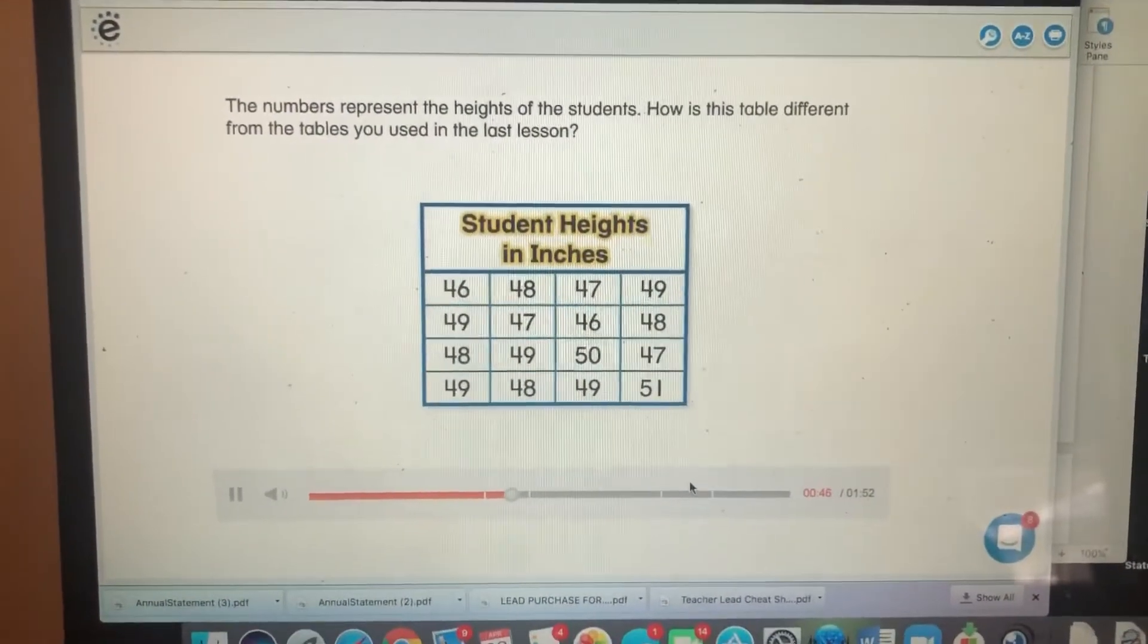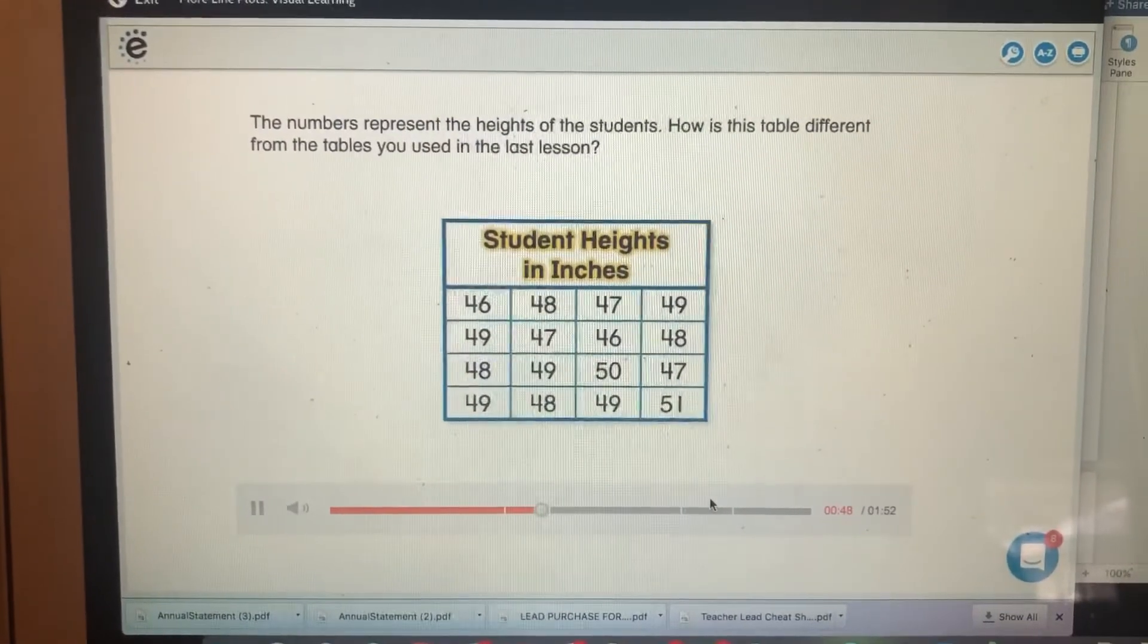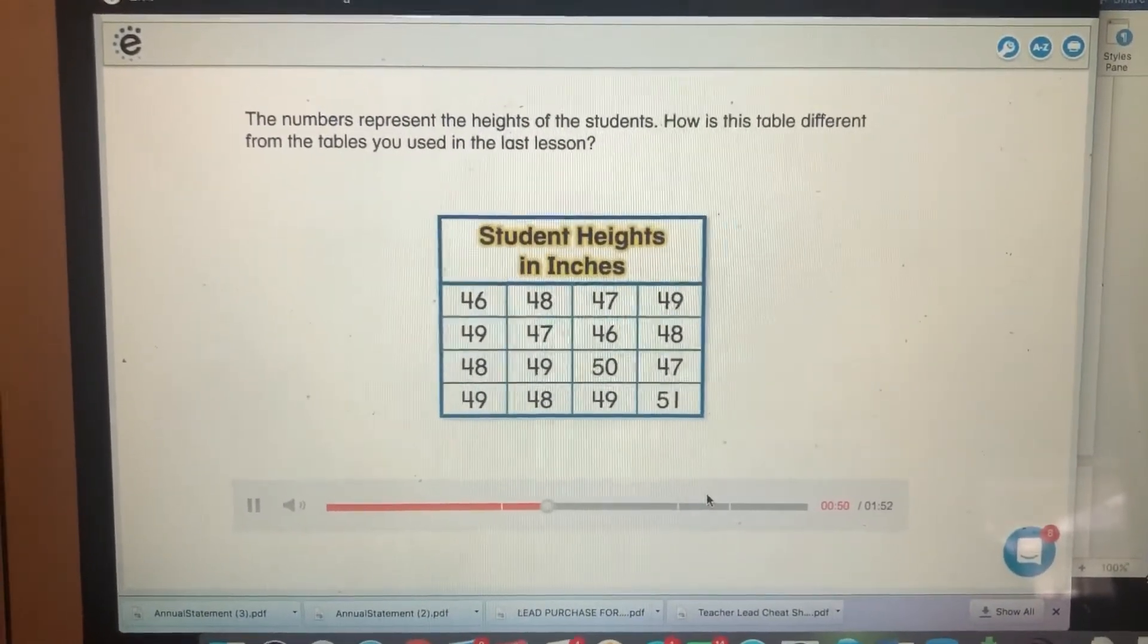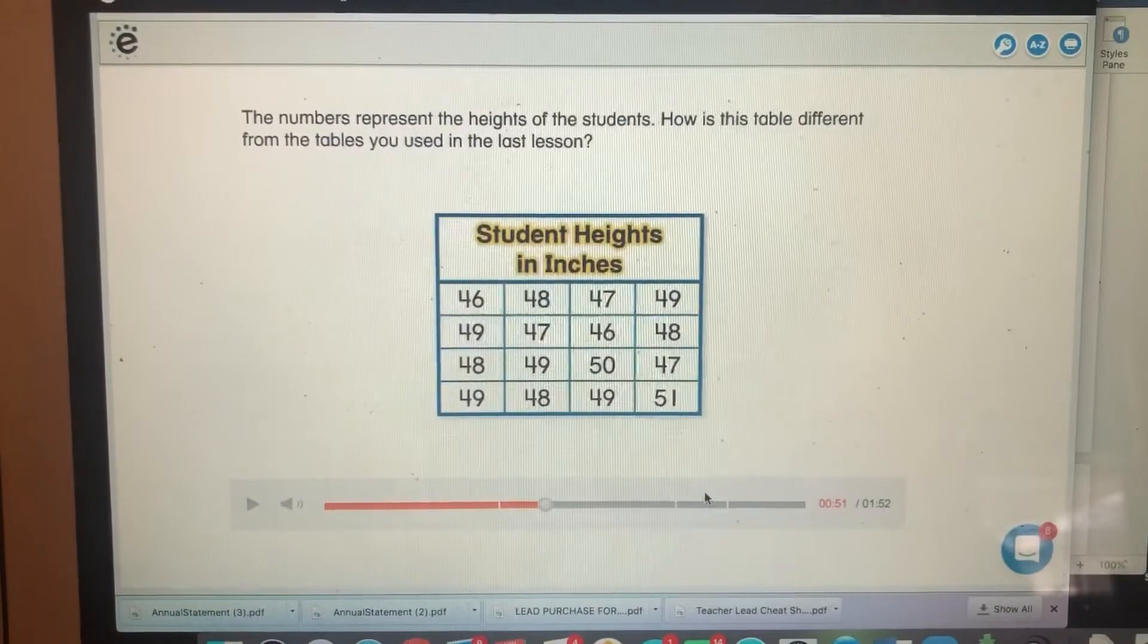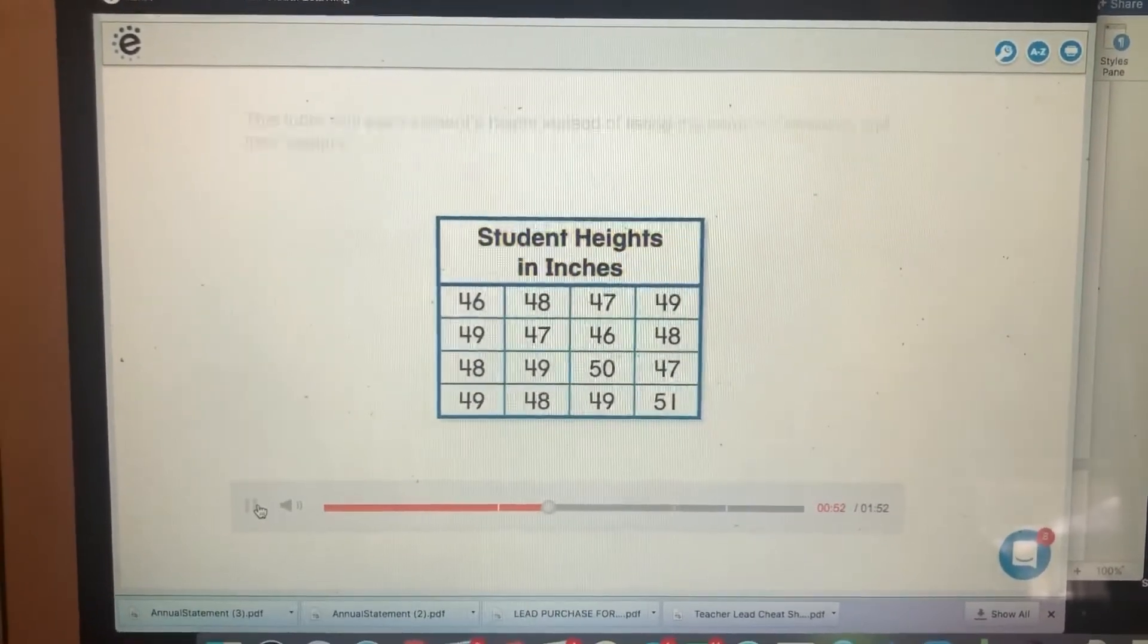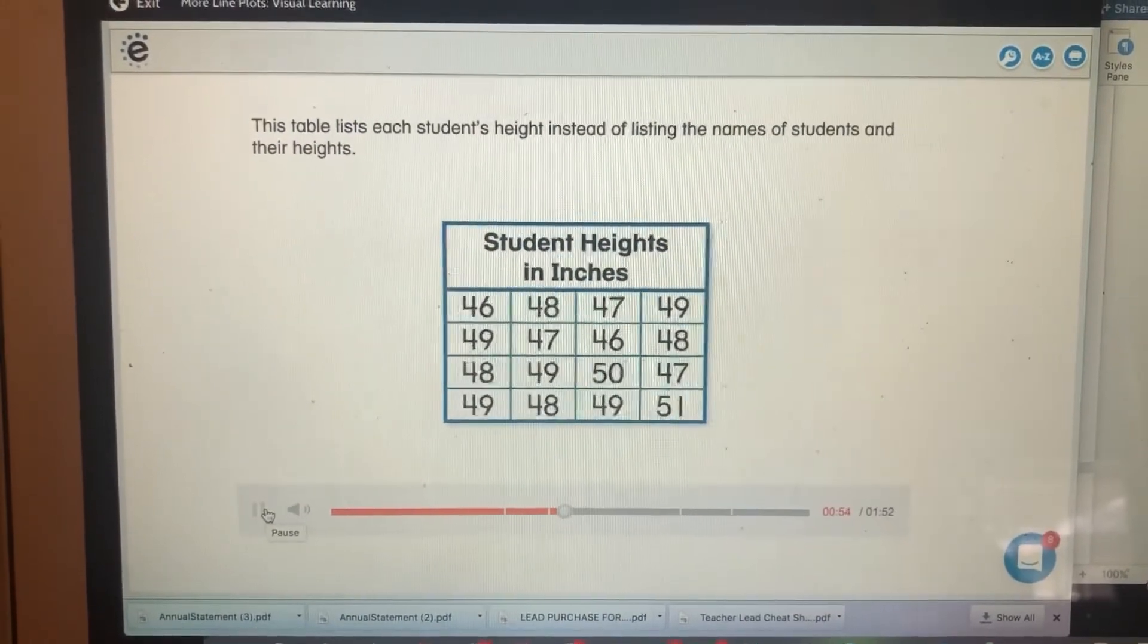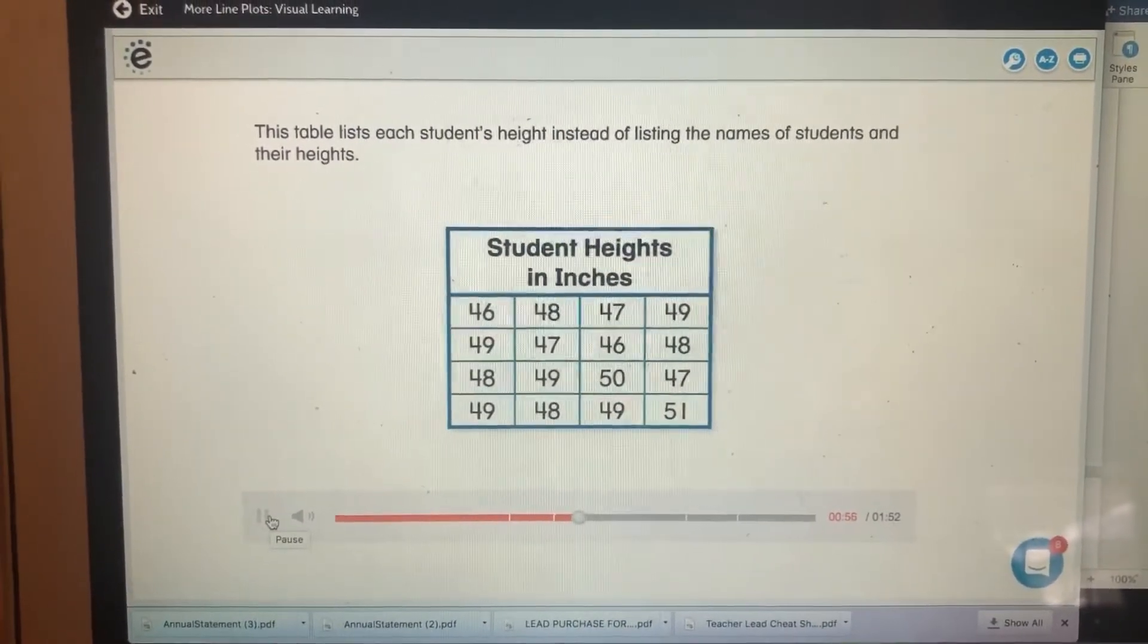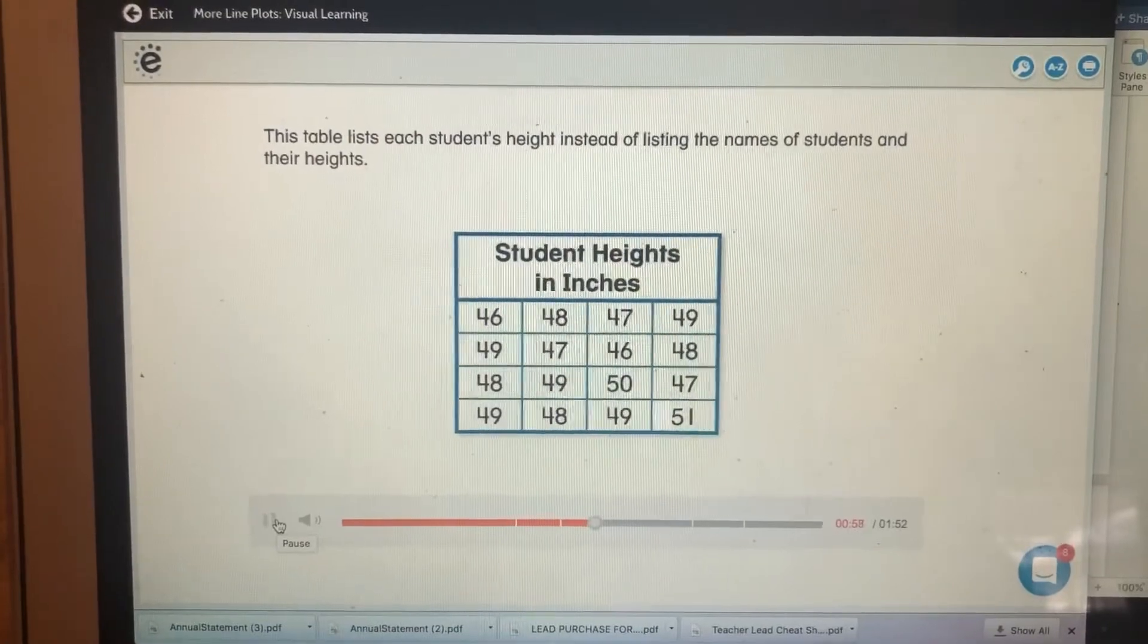How is this table different from the tables you used in the last lesson? This table lists each student's height instead of listing the names of students and their heights.